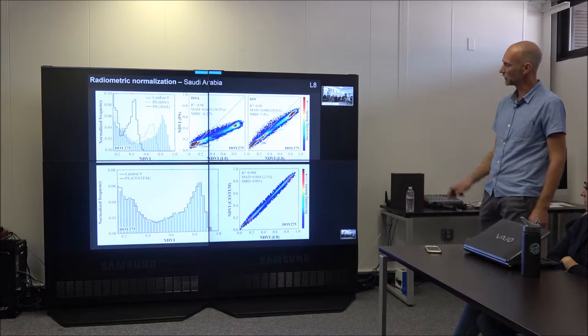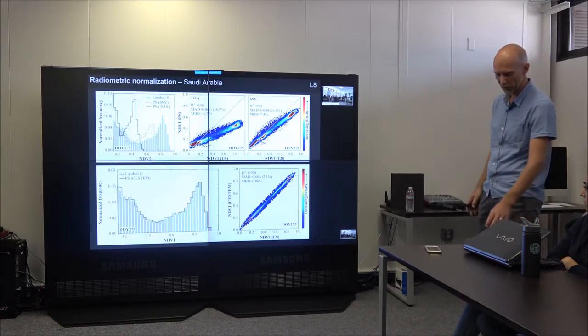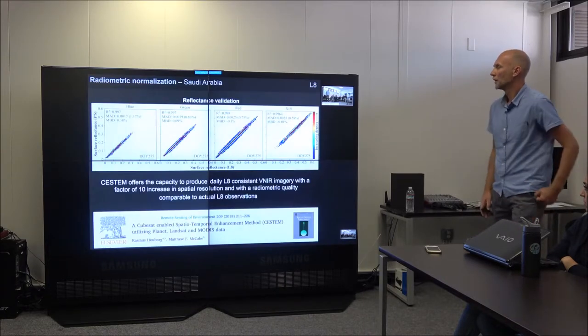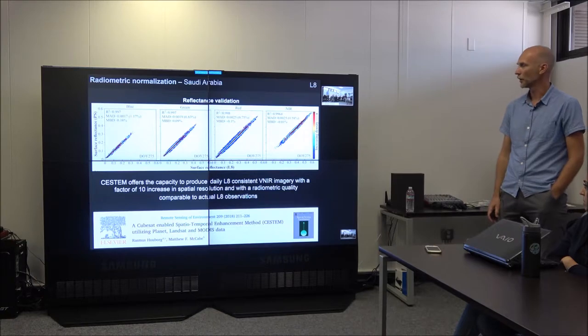It's not just a bias reduction, but it also kind of the spatial domain corrects for the differences. And you can apply this to the individual bands as well, as shown here. Blue, green, red, and near red.